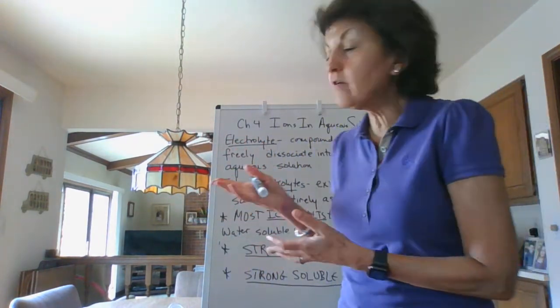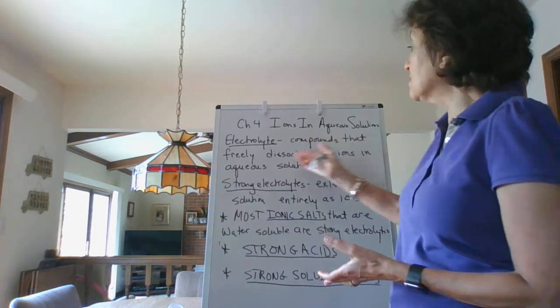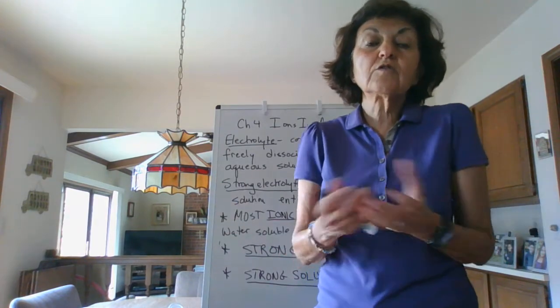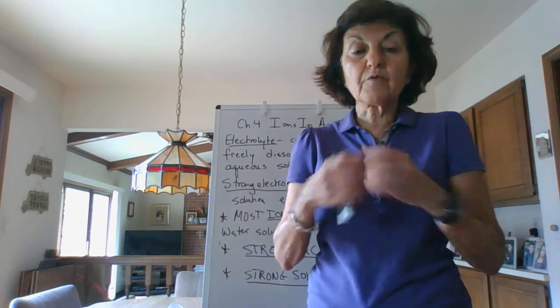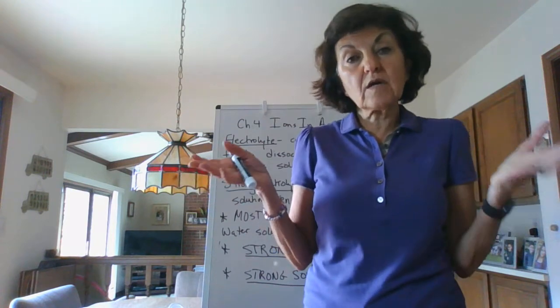It's filled with lots of different topics, but we're going to start off with the first topic of chapter four, which is identifying electrolytes and knowing which ones are the strong electrolytes. What is an electrolyte? Electrolytes are compounds that dissociate into ions in aqueous solutions. An aqueous solution means you're dissolving it in water. So anytime you throw something in water and it breaks apart — dissociates into ions very freely — it is considered an electrolyte.